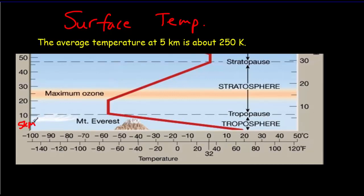If we choose a height of about 5 kilometers and use a temperature-altitude graph, drawing a horizontal line and going across, we reach the temperature at 5 kilometers. It turns out it's pretty close to negative 16 degrees Celsius. So at about 5 kilometers up from the surface of the Earth, the average temperature is about negative 16 degrees Celsius — that's a good prediction for that altitude.